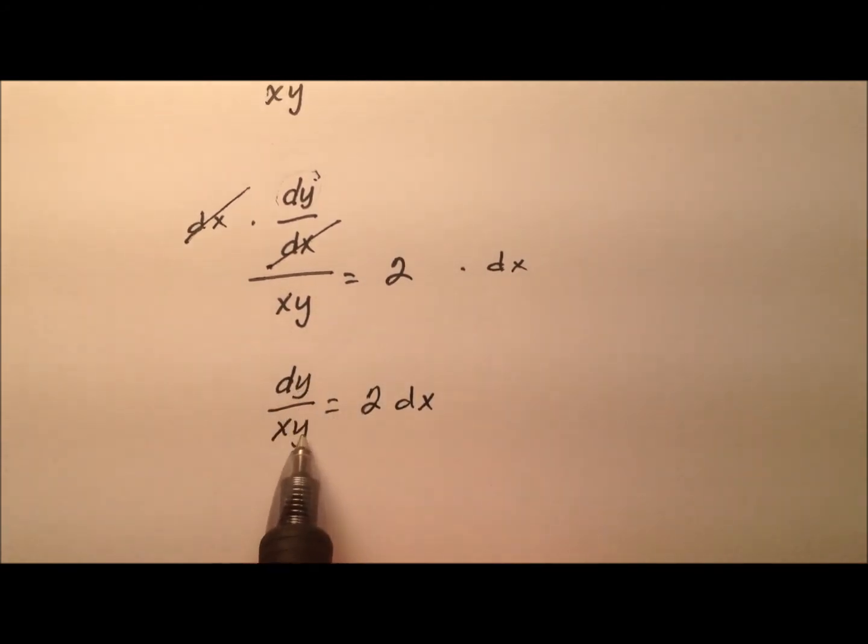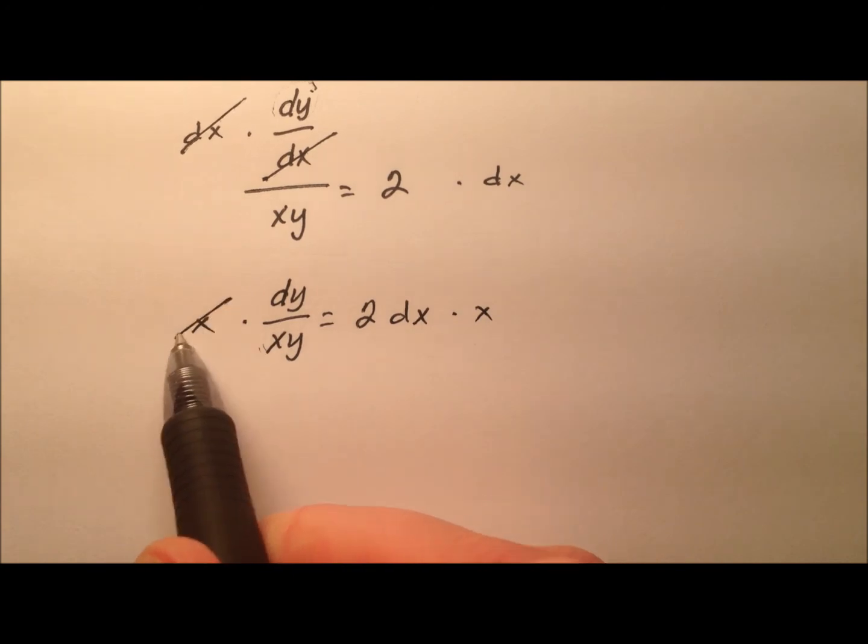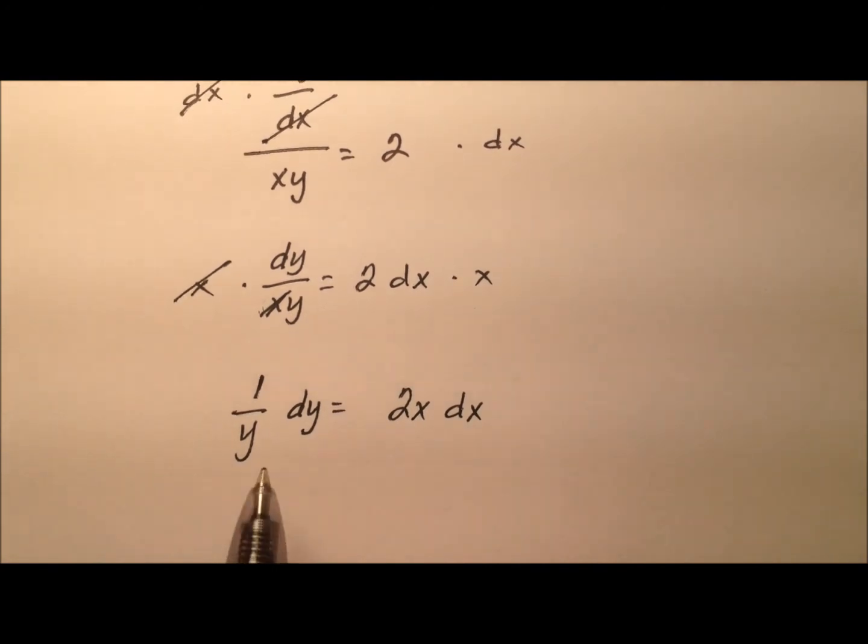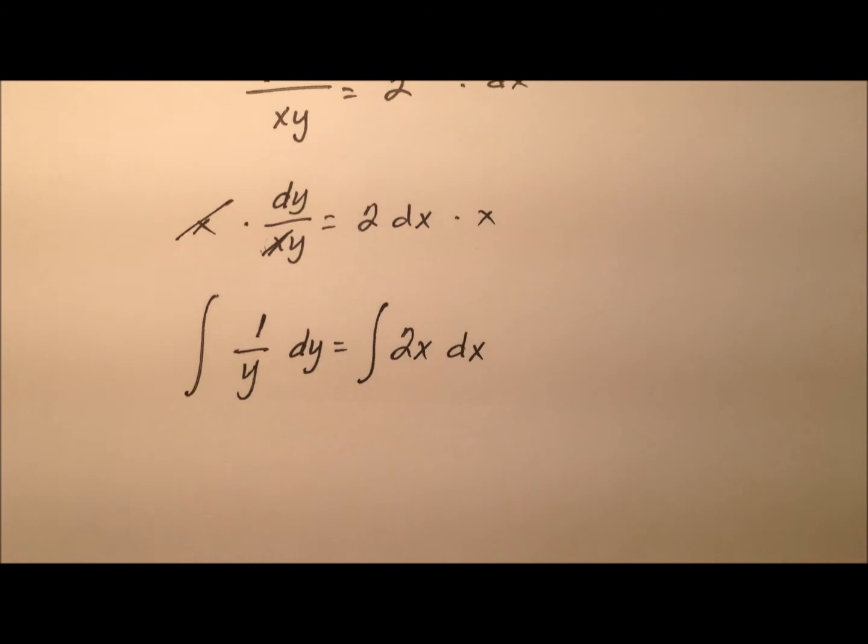So what this looks like now is dy over xy equals 2 dx. Well, I have my dy with my y, but I still have this little x guy over here. So let's go ahead and multiply both sides by x to get rid of that. So now when I put this all together, 1 over y dy equals 2x dx. So now I'm ready to integrate both sides of my equation since I have my y terms with my dy and that equals my x terms with my dx.